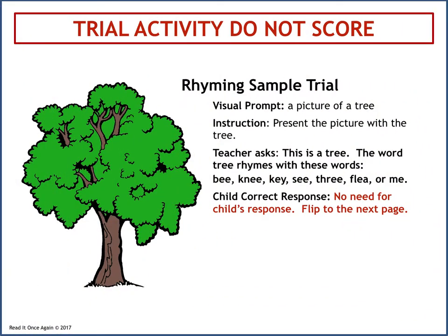Assessment question 11 begins with a sample trial activity for rhyming that is not intended to be scored — it is used only as an example to introduce the skill of rhyming and ensure children understand the directions. The visual prompt is a picture of a tree. The teacher says: This is a tree. The word tree rhymes with these words — be, knee, key, see, three, flee, or me. No need for a child's response; flip to the next page.